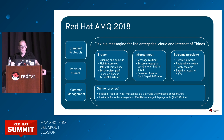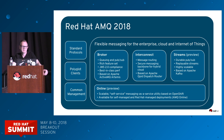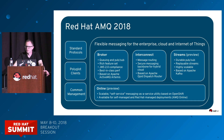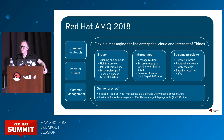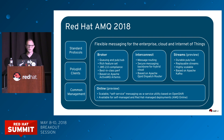Most folks will know AMQ for the broker. AMQ Broker has been around for some time — it's a pure Java messaging broker with a rich feature set, support for JMS 2.0 and a bunch of other language APIs, and great performance. Next we have Interconnect, which is a message router. Unlike a broker that takes ownership of messages, the router simply routes messages from producers to consumers.